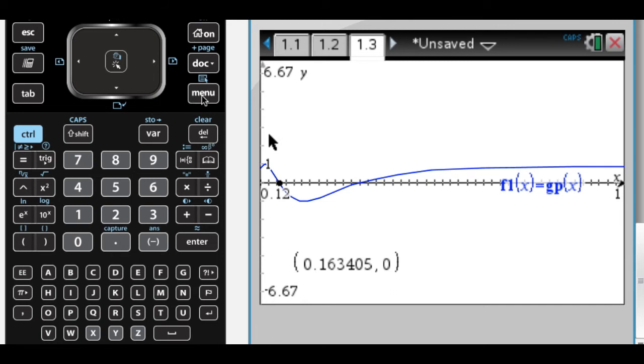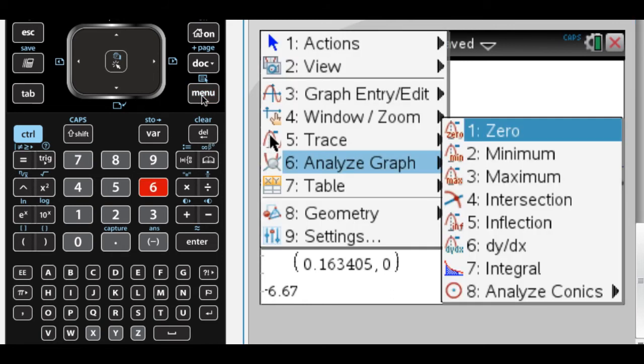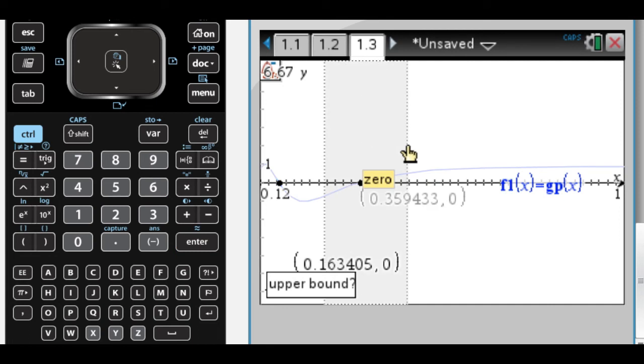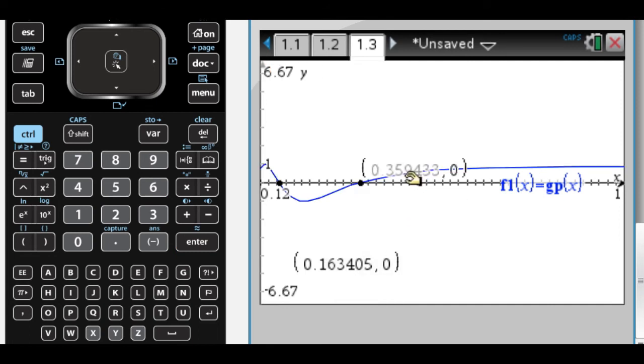And then the second zero will be 0.359. All right, so those are the two times that occurs. So I'd write g prime of x equals 0, and then that implies that x is those two values. And I'd be done.